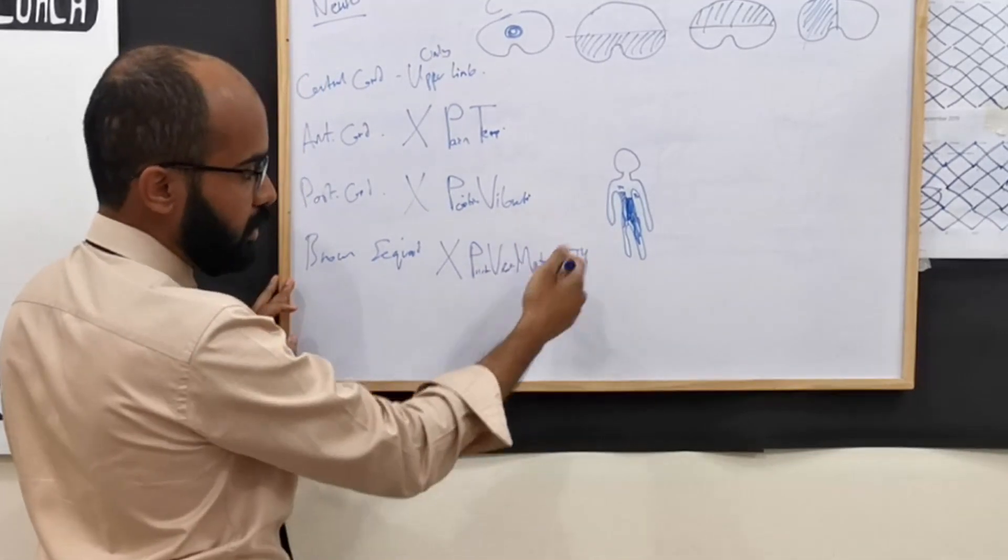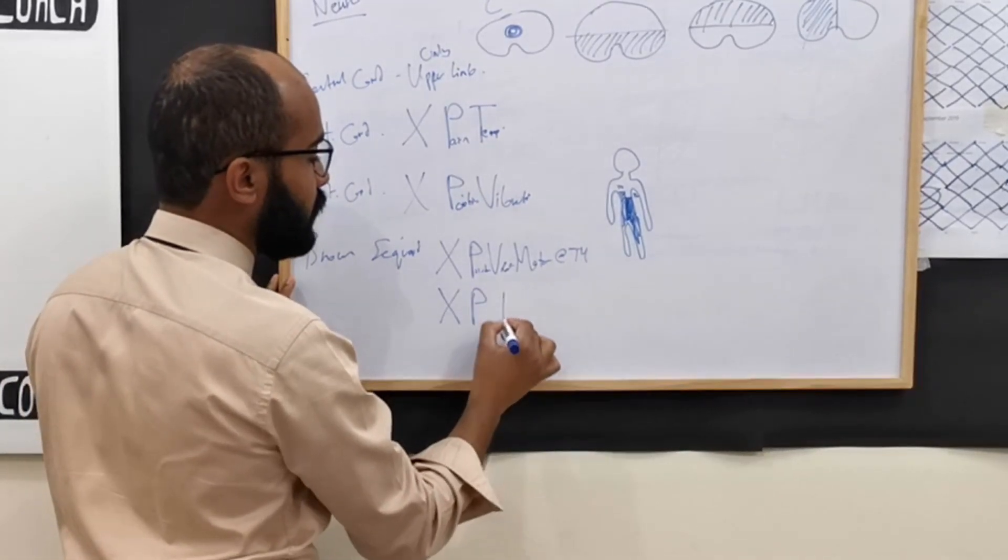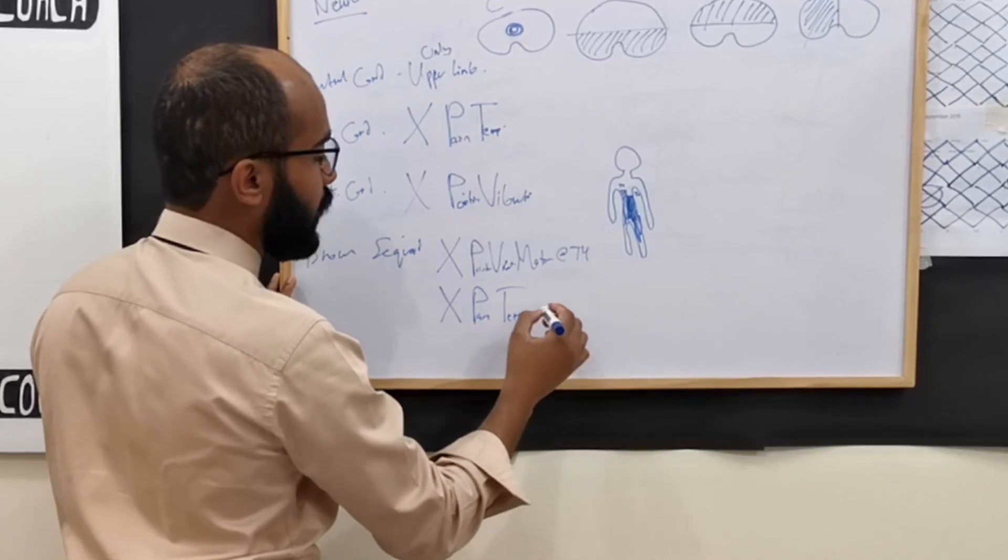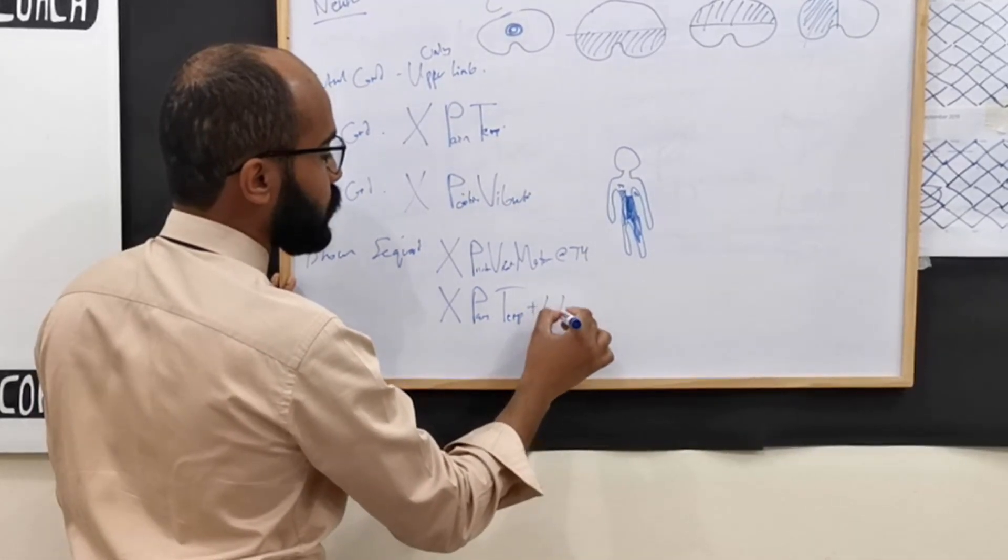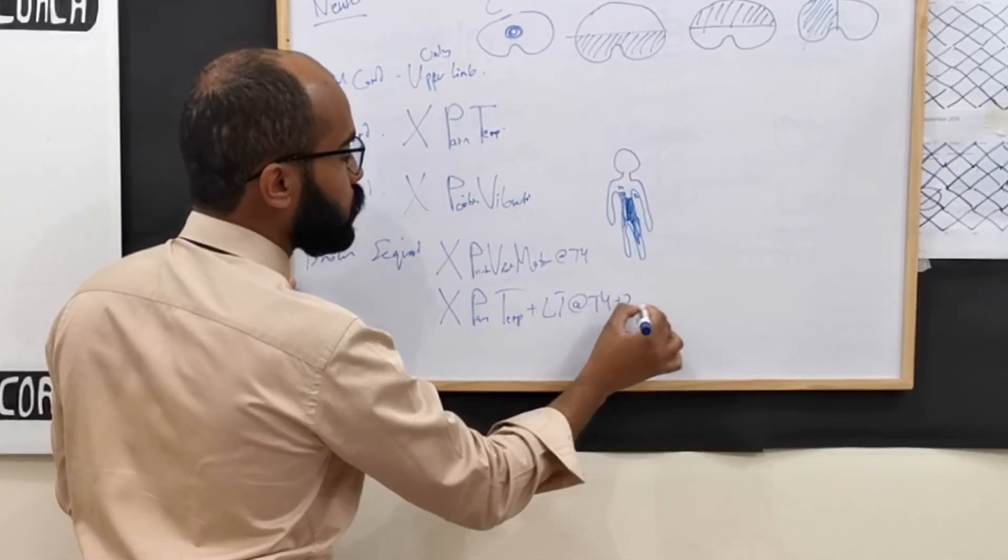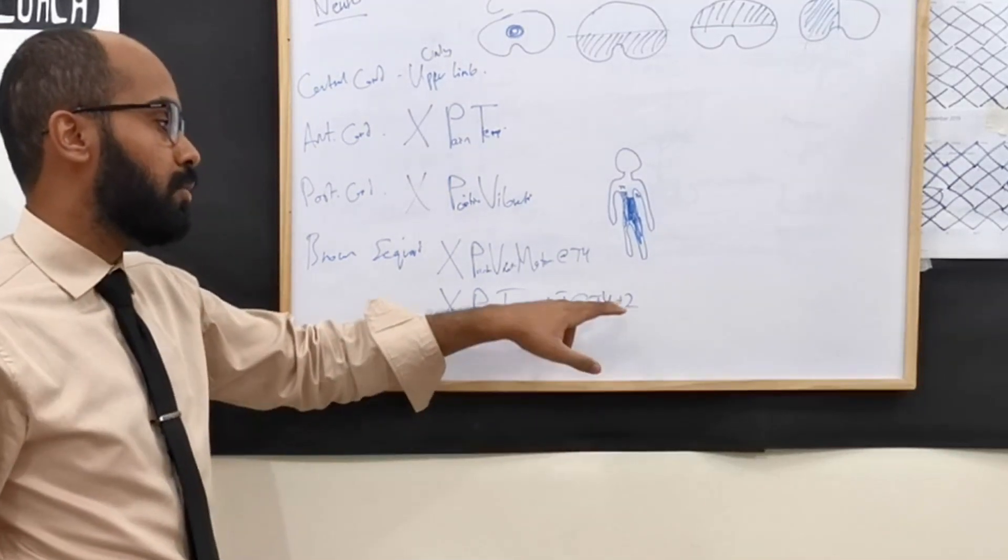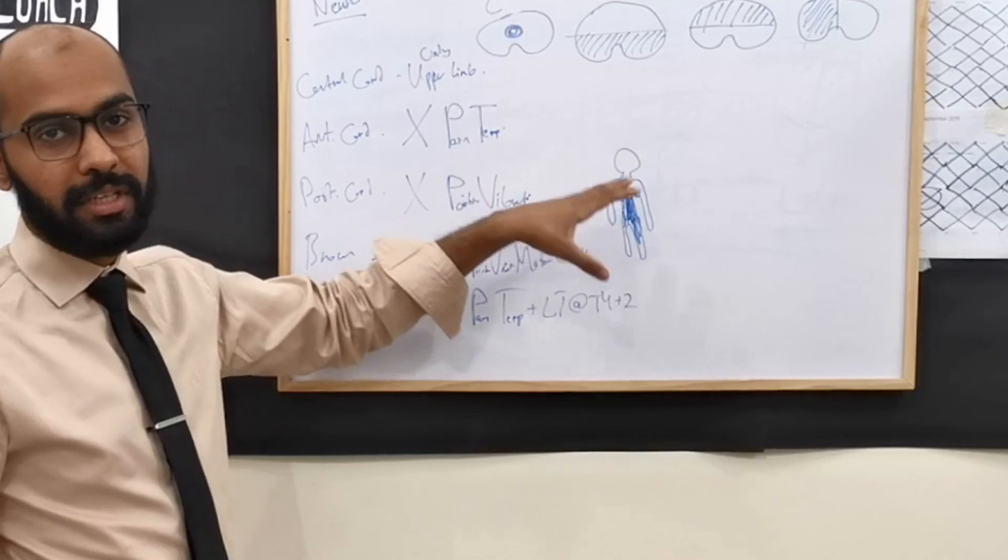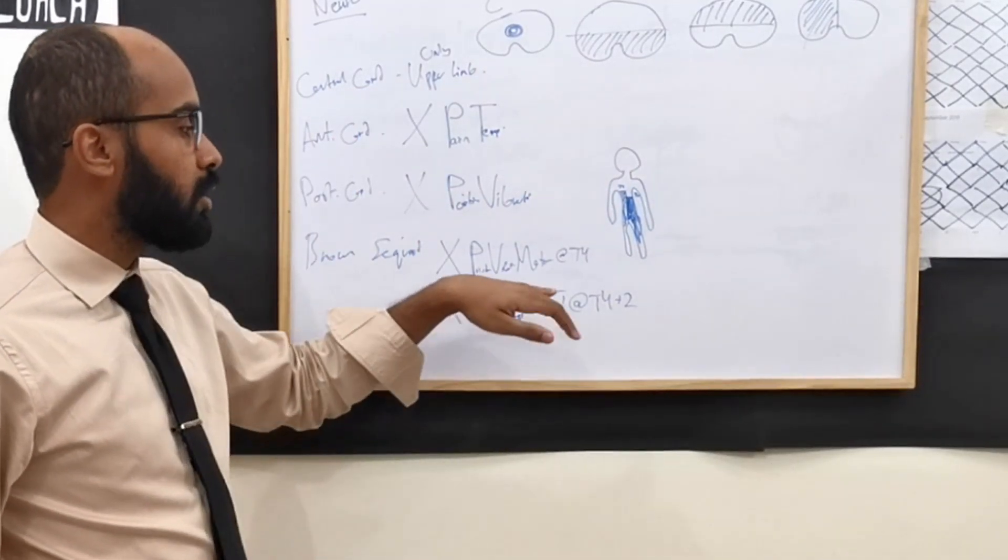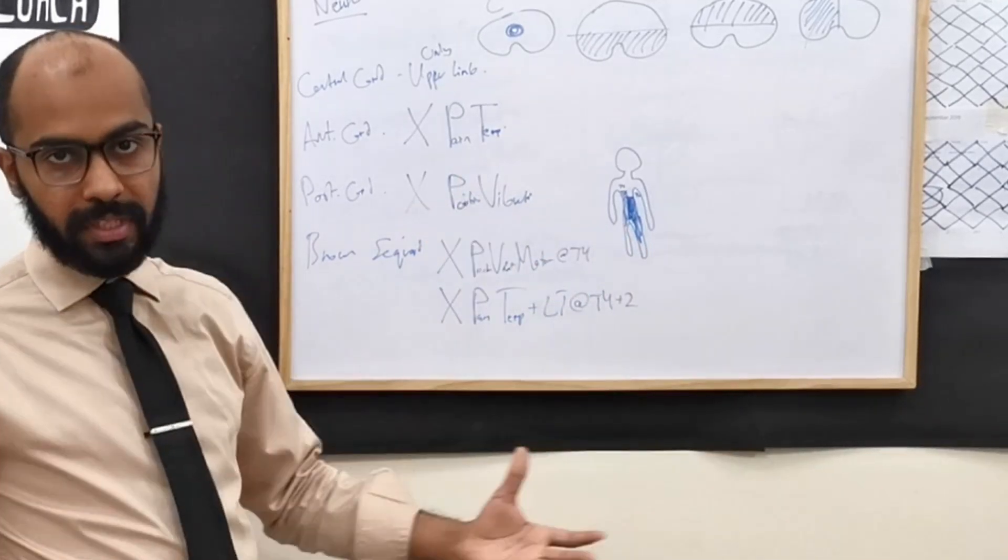So loss of position, vibration, and motor at T4. For example, this is the example we're giving T4. But there is also going to be loss of pain, temperature, and light touch at T4 plus 2. So that means T6. The reason I said T4 plus 2 is just so that you don't get used to that the injury is always at T4. It could happen at T6. And then we'd have loss of pain and temperature and light touch at T6 plus 2, so T8.